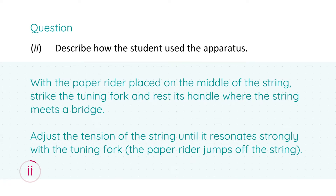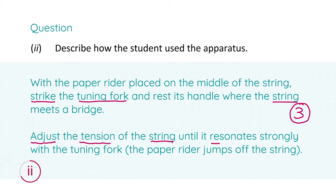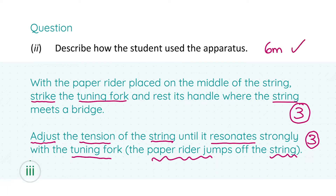For part two, we're asked to describe how the student used the apparatus. With the paper rider placed in the middle of the string, strike the tuning fork and rest its handle where the string meets a bridge — that's your first three marks. Adjust the tension of the string until it resonates strongly with the tuning fork, i.e. when the paper rider jumps off the string — that gives you your next three marks. Six marks done.